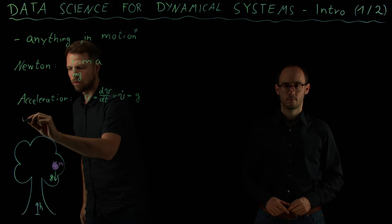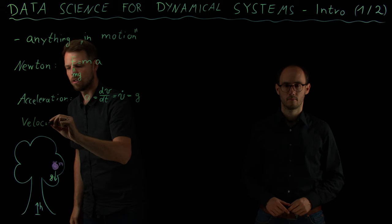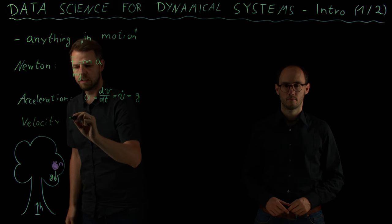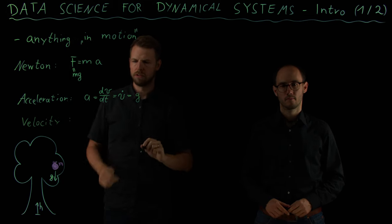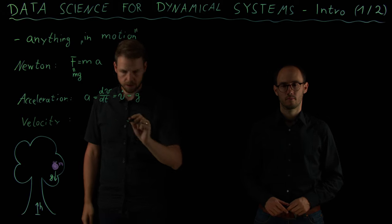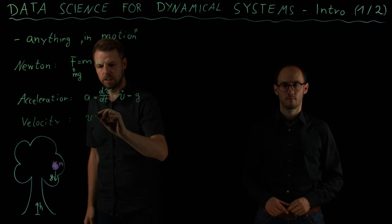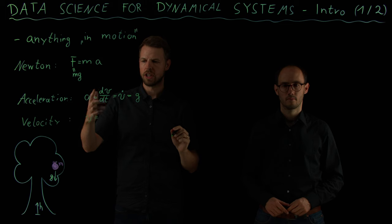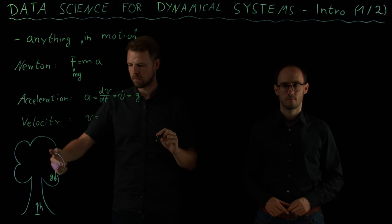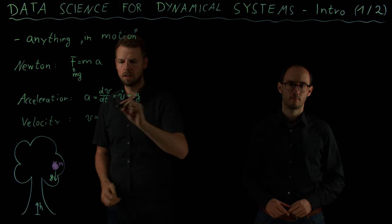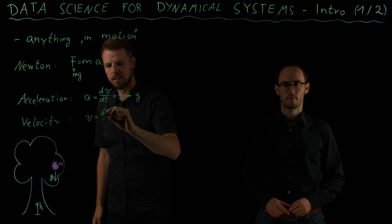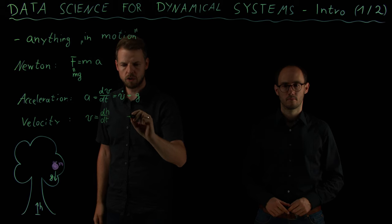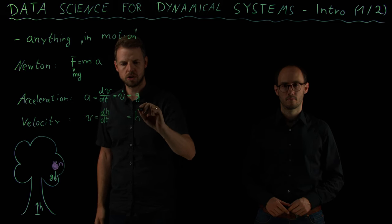So we can also write something down for the velocity. v is velocity, which we denote as the change of position over time. How fast does this apple fall? Which means how quickly does the height change with respect to time? This can also be denoted by h dot.